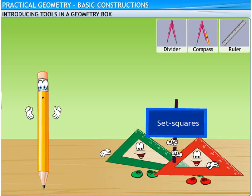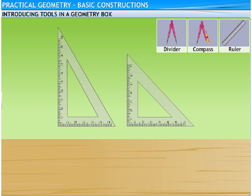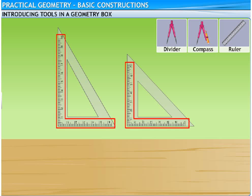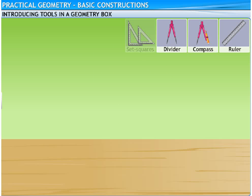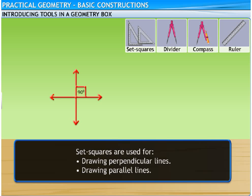These instruments always come with a pair of triangular tools called set squares. One of the set squares is an isosceles triangle, while the other one is a scalene triangle. Note that both of them have right angles at one corner. The isosceles set square has two angles measuring 45 degrees each. The scalene set square has two angles measuring 30 degrees and 60 degrees. The two perpendicular sides of each set square are graduated into centimeters.